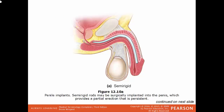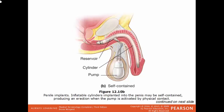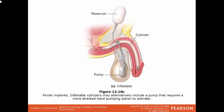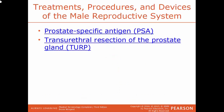An example of a penile implant: a flexible tube is inserted into the shaft of the penis, providing a partial erection. Another type has an inflatable cylinder inserted into the shaft — when a pump is activated, the penis becomes erect. A hand-activated pump version is also available.